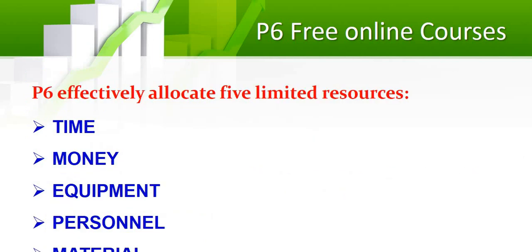Using P6, you can allocate and add five types of resources: money, time, equipment, personnel, and material. You can add all these kinds of resources to your project and assign them to the WBS and the activities.